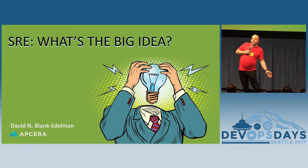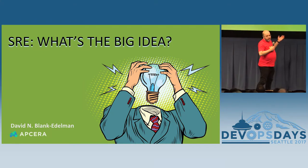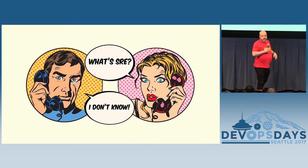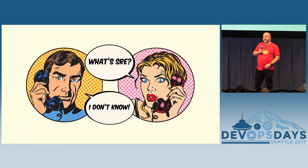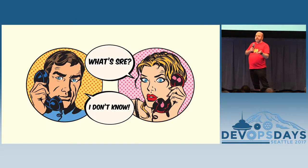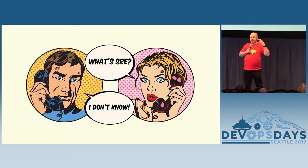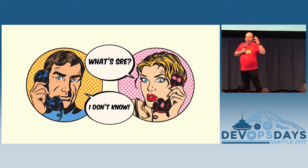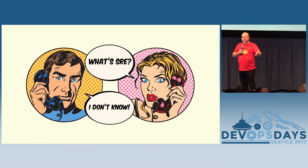Today I'm going to be talking about SRE — site reliability engineering. Site reliability engineering is an engineering discipline that attempts to engineer failure out of a system in an attempt to get a system to a certain level of reliability that you want.